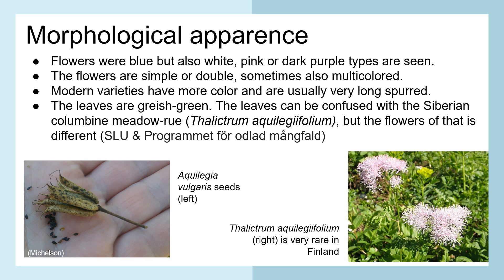Morphological appearance: flowers are blue but also white, pink and dark purple types are seen. The flowers are simple or double, sometimes also multicolored. Modern varieties have more color and are usually very long-spurred. The leaves are grayish green and can be confused with the Siberian meadow-rue, Thalictrum aquilegiifolium, but the flowers of that one are different. This is a very rare plant in Finland and also not that common in Estonia.